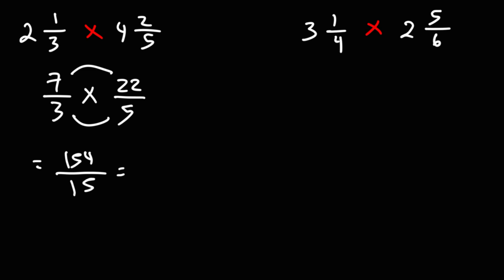Now let's convert this improper fraction to a mixed number. 154 - what is the highest multiple of 15 just under 154? It's going to be 150. And 154 minus 150 is 4. So we can break down 154 over 15 as 150 over 15 plus 4 over 15. Now 150 divided by 15 is 10, and 10 plus 4 over 15 is 10 and 4 fifteenths as a mixed number.